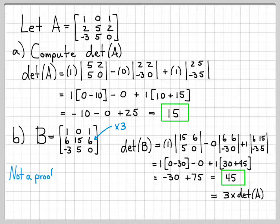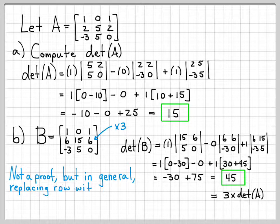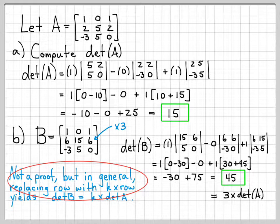So this suggests something interesting. This is not a proof by any means. This is just an example of the phenomenon. But in general, if we have a matrix A and we know its determinant, if we create another matrix that's related to the first matrix, except a row has been changed by a factor—in other words, if we've replaced a row with k times the row—it's very easy to know how the determinant will change. The original determinant will be multiplied by whatever this factor is. So this is a general property of matrix determinants that we can always use.